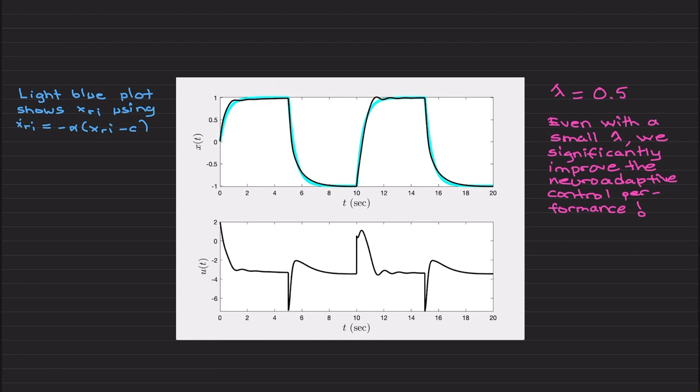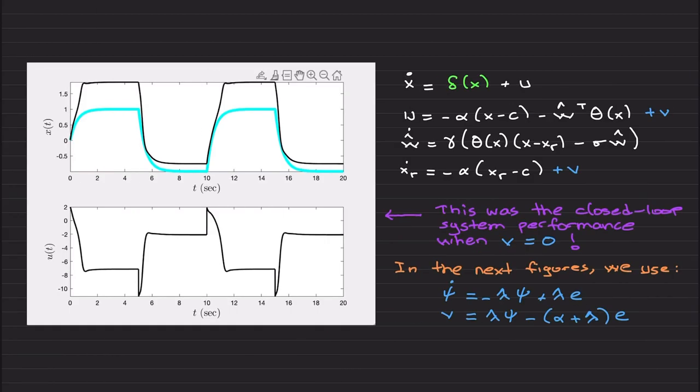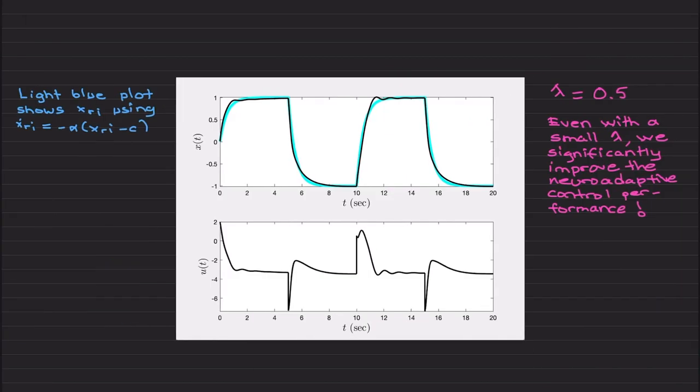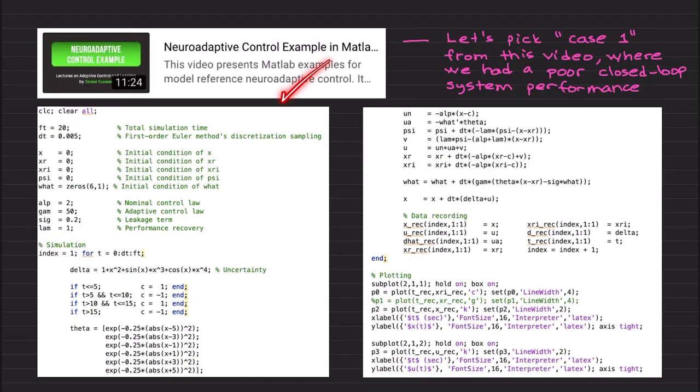Even with small lambda, you will see that if you compare this figure with the previous one, we are significantly getting closer to the ideal closed-loop system. That's a very great performance, and we did this without adding additional neurons. Because if you remember, case 4 of this video, we also obtained a nice closed-loop system performance.